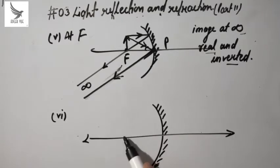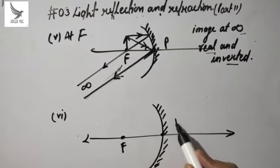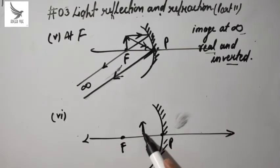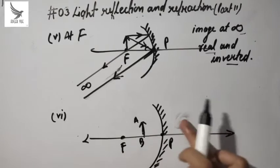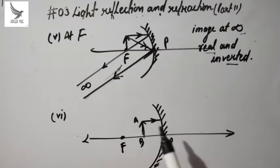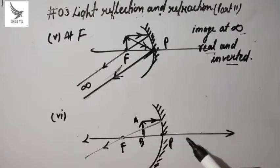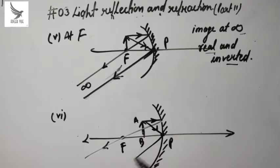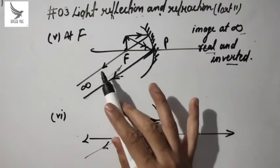We have a principal axis, here is the focus, here is the pole, and if we place an object AB between these two points, then to find its image: the first ray is parallel to the principal axis, so after reflection it passes through the focus. A second ray coming through the pole reflects back at the same angle. But both these rays are diverging rays, so they don't actually meet.